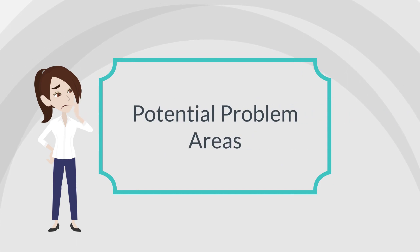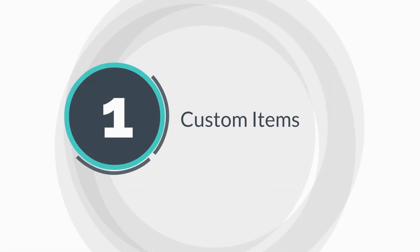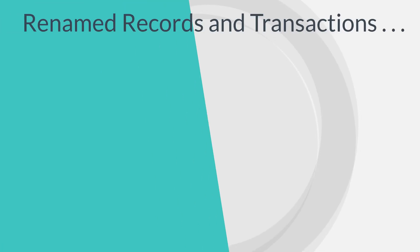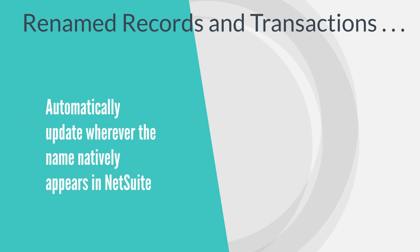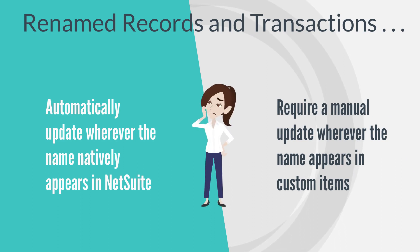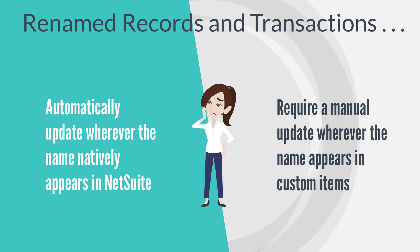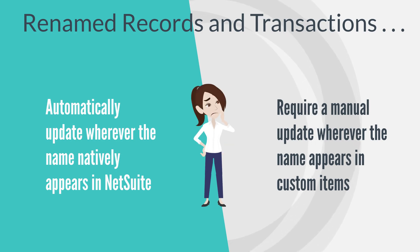Renaming records and transactions is fairly simple, but some areas may cause confusion. First, remember to change any customized items that have the original name. When you change the name of a record, transaction, or account item, that name generally updates throughout NetSuite. However, it will not update for any customized items. For example, if you have a custom field, a custom form, or a custom tab that uses the previous name, you will need to manually change the name to reflect your company's preference.